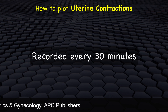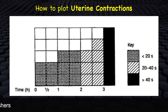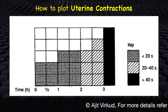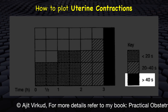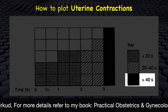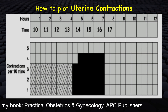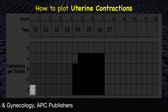Uterine contractions are observed and recorded every 30 minutes. They are plotted as the number of contractions in a 10-minute period; their duration is recorded in seconds. A visual key for recording contractions is as follows: a square with dots represents contractions less than 20 seconds duration; a square with dashes represents contractions of 20 to 40 seconds; and a black box represents contractions greater than 40 seconds. Below the timeline are 5 blank squares across the entire length of the partograph; each square represents one uterine contraction.